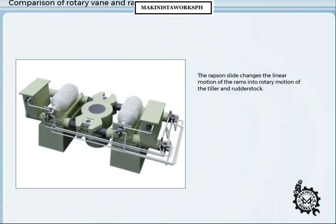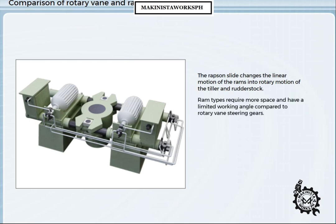On the ram type, the piston or ram is connected to the tiller, often through a rapson slide, which changes the straight line motion of the rams into rotary motion of the tiller and rudder stock. This means that ram type steering gears require more space than rotary vane types, and that the working angle is limited compared with the rotary vane steering gear.